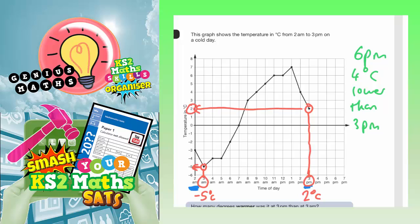So 3pm was 2 degrees, we've already got that, so we need to go 4 degrees lower. So if you're on 2 degrees, 1 lower would be 1, 2 lower would be 0, 3 lower would be minus 1, 4 lower would be minus 2.